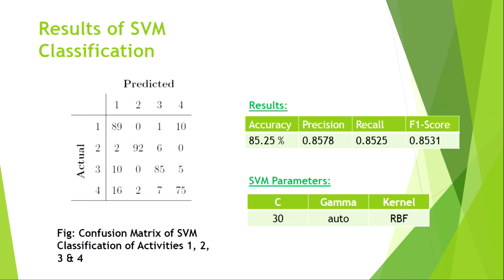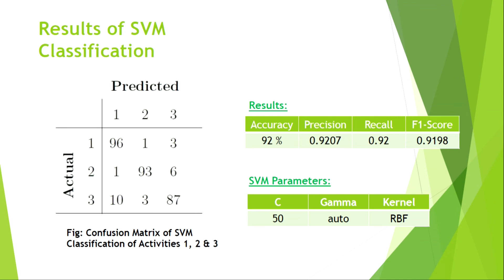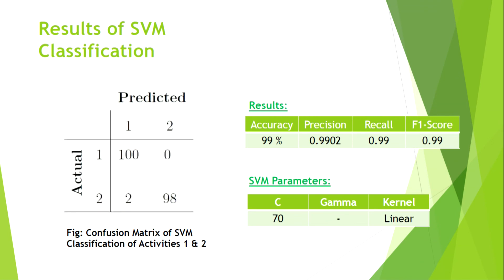Using SVM classification across all 4 activities, we achieved an accuracy of 85 percent. When comparing only the 1st, 2nd, and 3rd activities, accuracy improved to 92 percent. The 1st and 2nd activities are more easily distinguished because their breathing frequencies are very different.